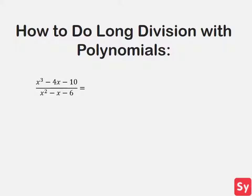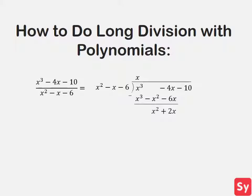Let's see an example. We have x cubed minus 4x minus 10 over x squared minus x minus 6. We will use long division to rewrite this fraction. We put the numerator inside the division bracket and the denominator on the outside. Next, we think about what to multiply the denominator by to get x squared equal to x cubed. So we put down an x and multiply the denominator by x. Now we subtract, leaving us with x squared plus 2x.